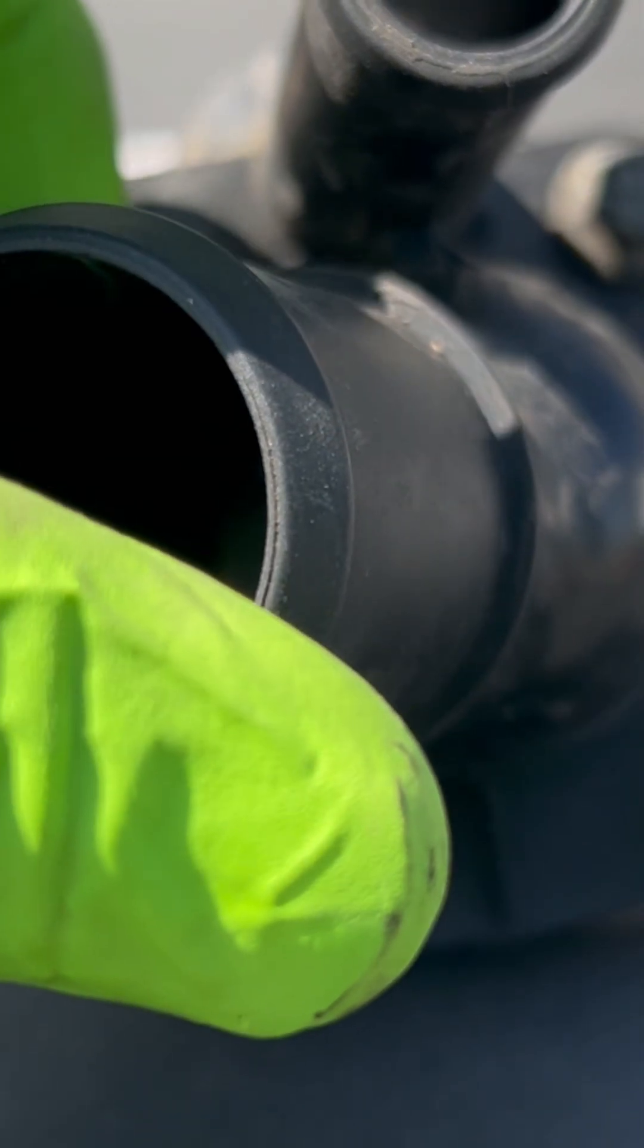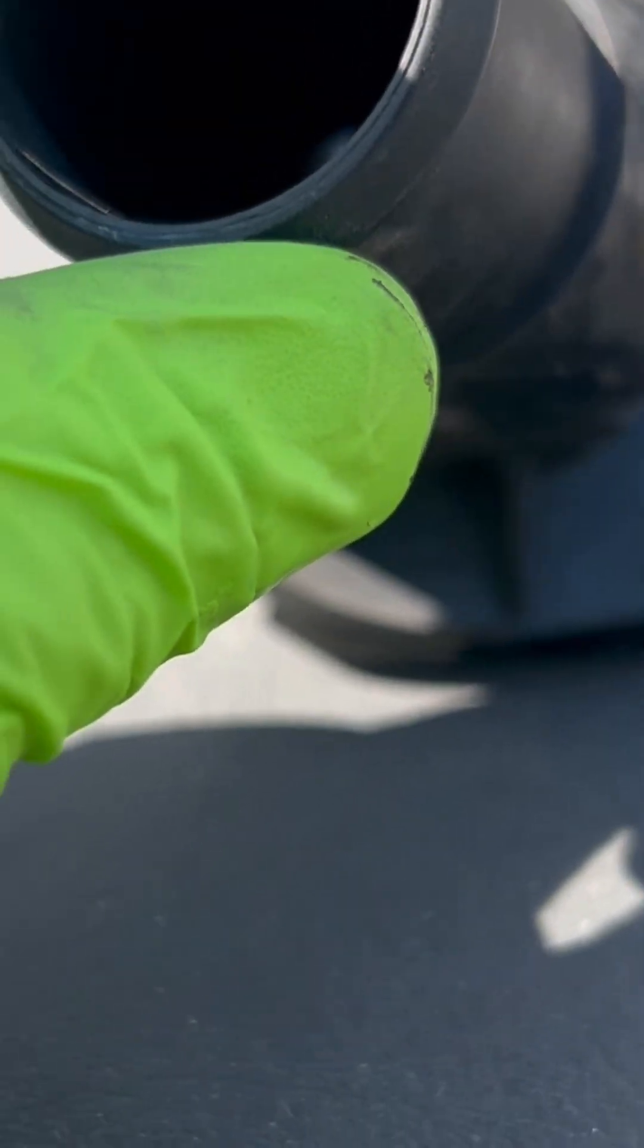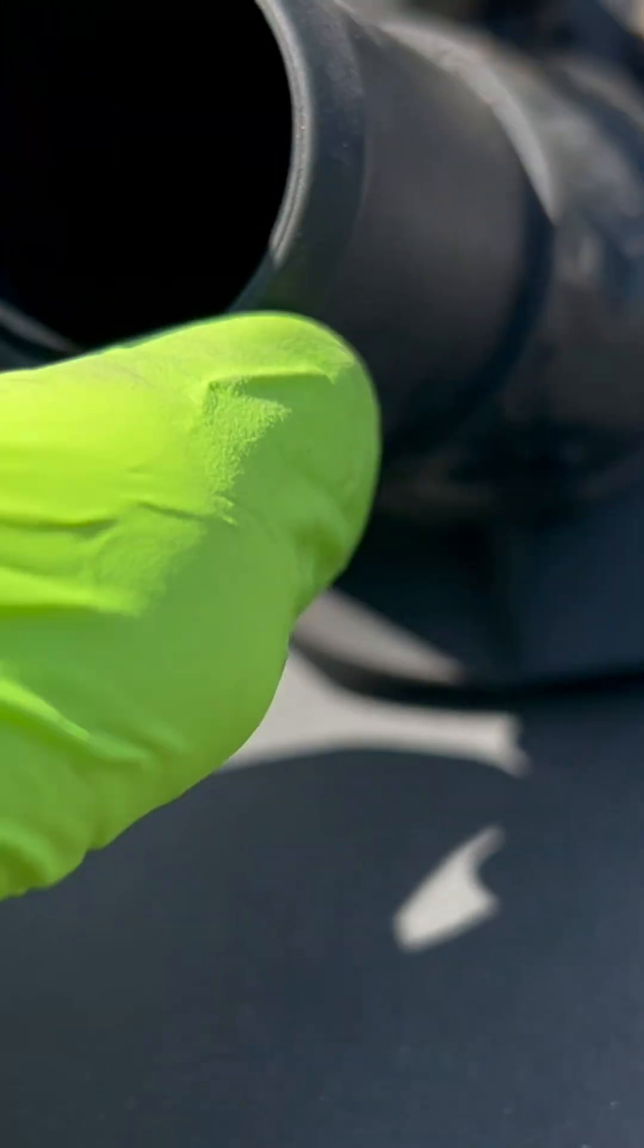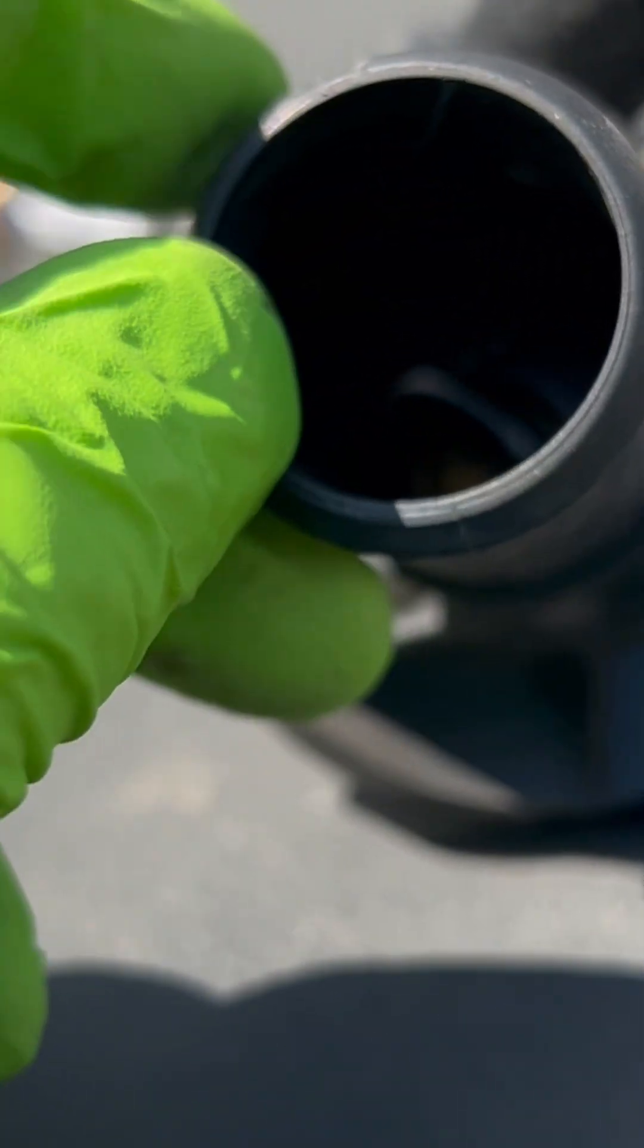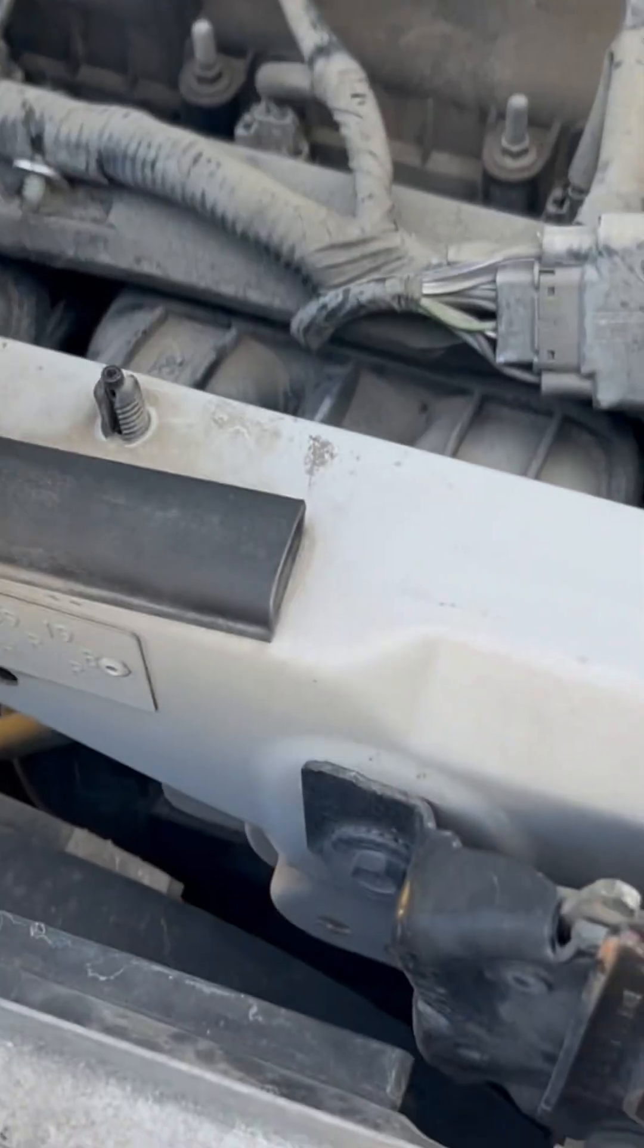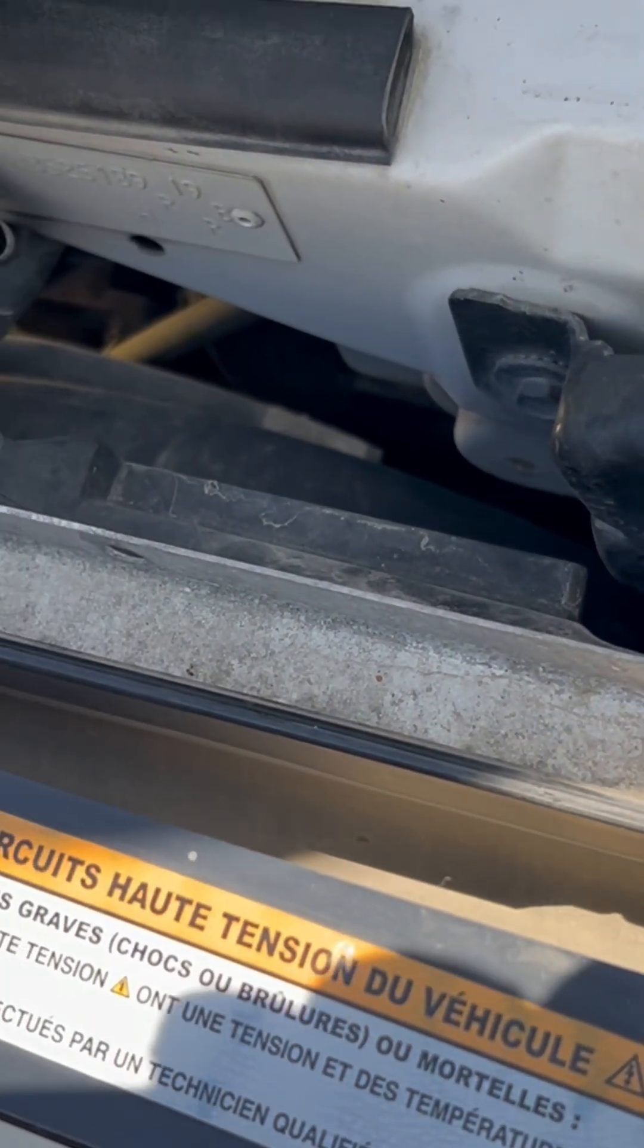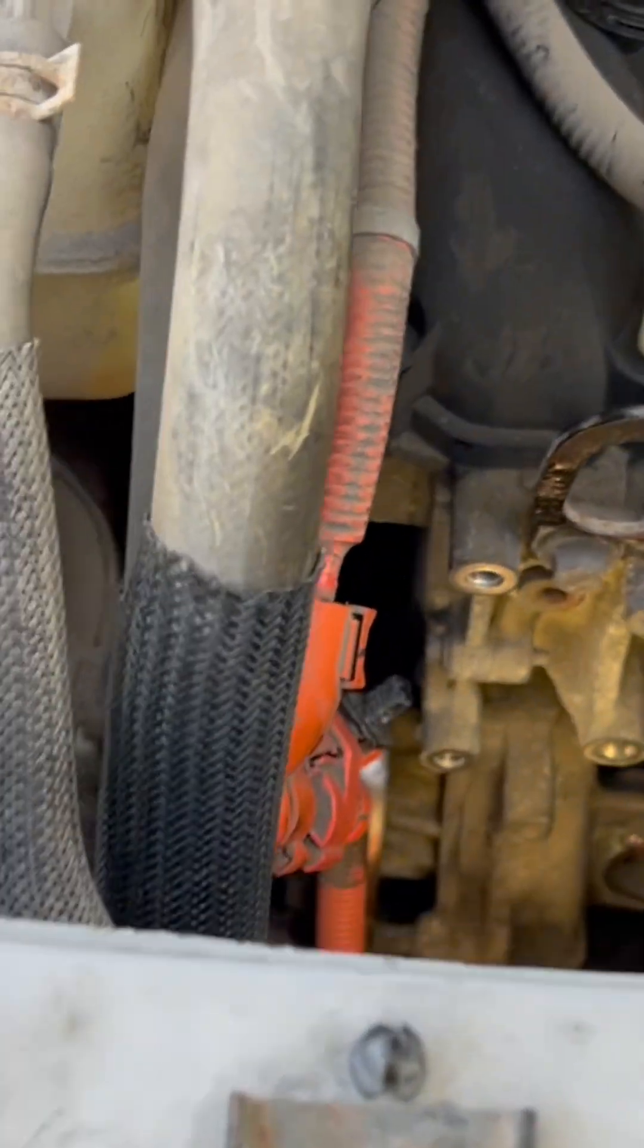And then the worst part is this one, the lower one, which is not visible at all. You cannot see it. You have to loosen it by feel. If you want to access it, you have to remove the intake manifold, and removing the intake manifold for this car is no easy task. Lots of stuff to remove, including the radiator and the cooling fan. Yep, that's why I hate working with Ford.